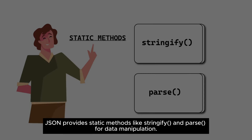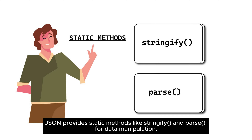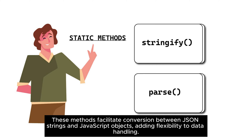JSON provides static methods like stringify and parse for data manipulation. These methods facilitate conversion between JSON strings and JavaScript objects, adding flexibility to data handling.